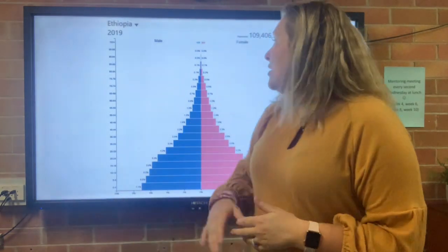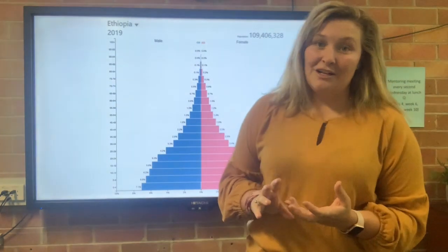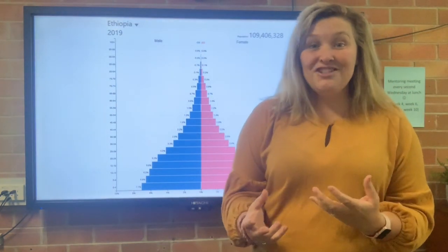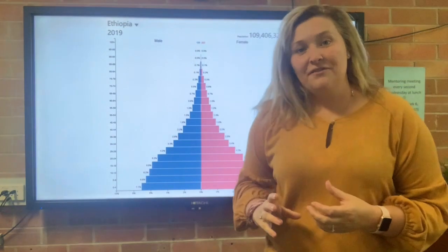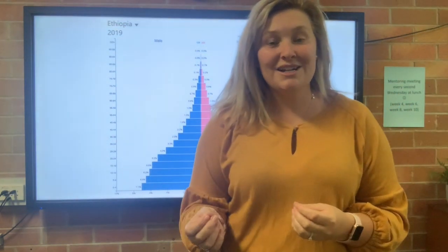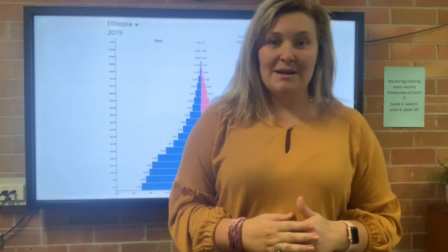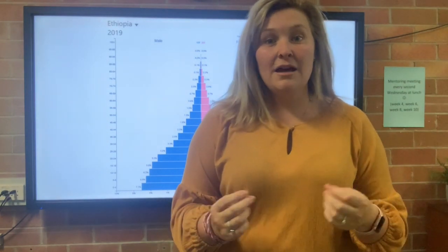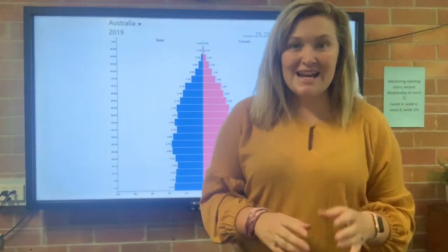If we have a look at Ethiopia's pyramid, there's nobody in the 90 to 94 category — it doesn't even make up a percentage. We've got only 0.1% in the 85 to 89 range. When we compare this to a developed country like Australia, you'll notice that's a very low life expectancy, with a clear link to healthcare and education.